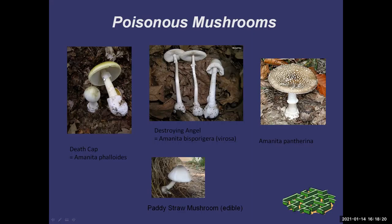This one's a death cap. Amanitas have an annulus and a bulb. The death cap has a sort of greenish tinge to the cap, contrasted to the destroying angel, which is pure white — hence the name angel. The panther cap is brown with little spots — a lot of amanitas have these little spots. You may have heard of people on the West coast getting poisoned with death cap because they thought they were straw mushrooms, which are popular in Asia. The moral of the story is just because something's safe in your country doesn't mean something that looks similar in another country is safe.